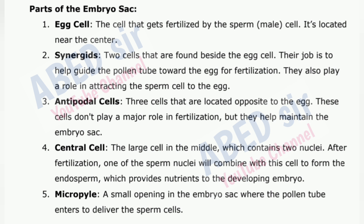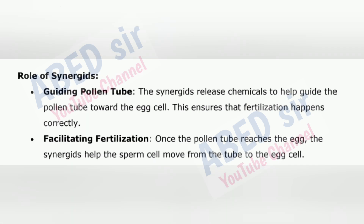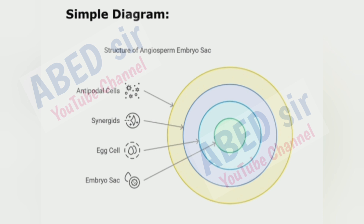5. Micropyle — a small opening in the embryo sac where the pollen tube enters to deliver the sperm cells. Role of synergids: Guiding pollen tube — the synergids release chemicals to help guide the pollen tube toward the egg cell, ensuring that fertilization happens correctly. Facilitating fertilization — once the pollen tube reaches the egg, the synergids help the sperm cell move from the tube to the egg cell.